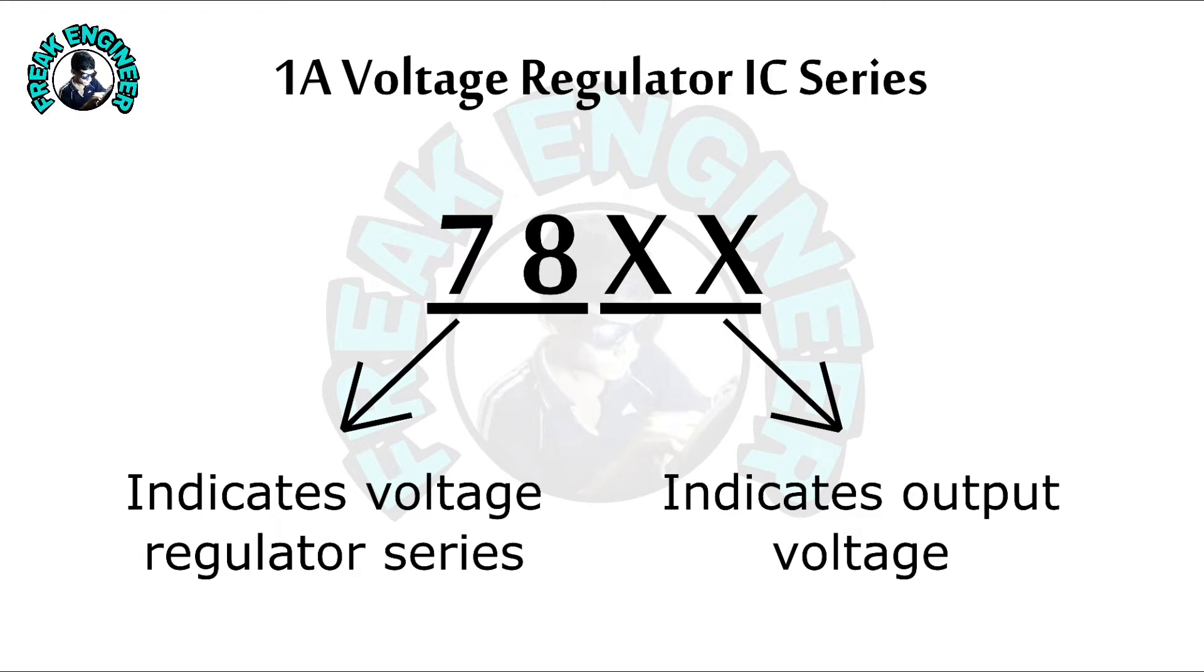Hi, myself Akash, and this video is about 1 ampere voltage regulator IC for 1 ampere DC output. We use 78XX voltage regulator IC series where the first two digits indicate the voltage regulator series and the last two digits indicate the output voltage.